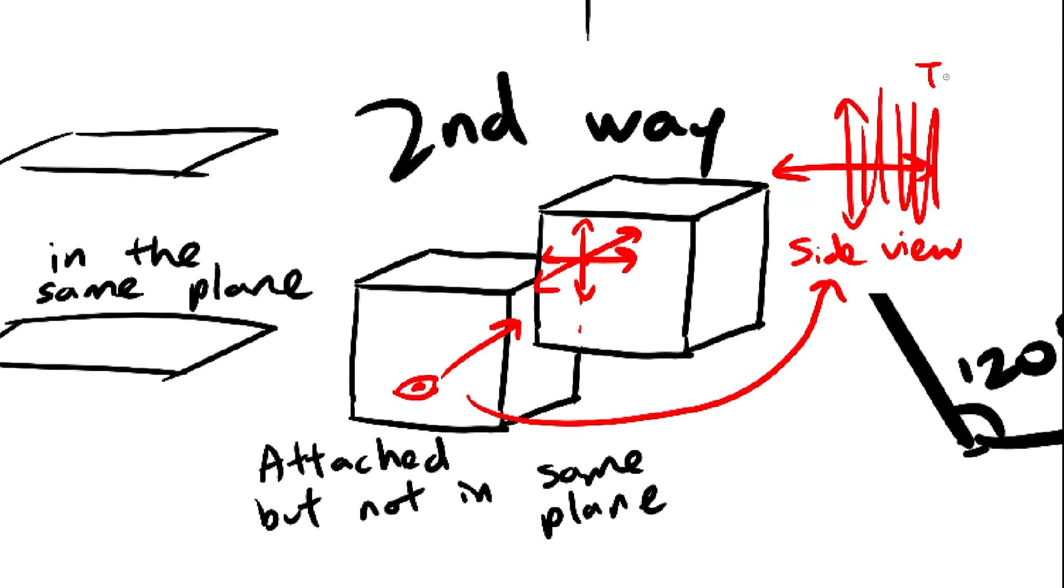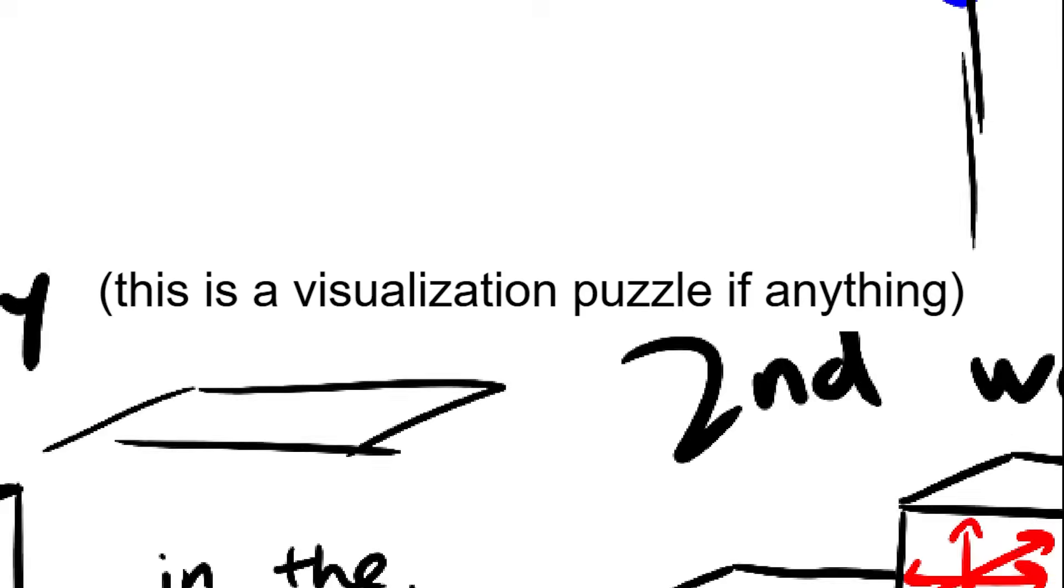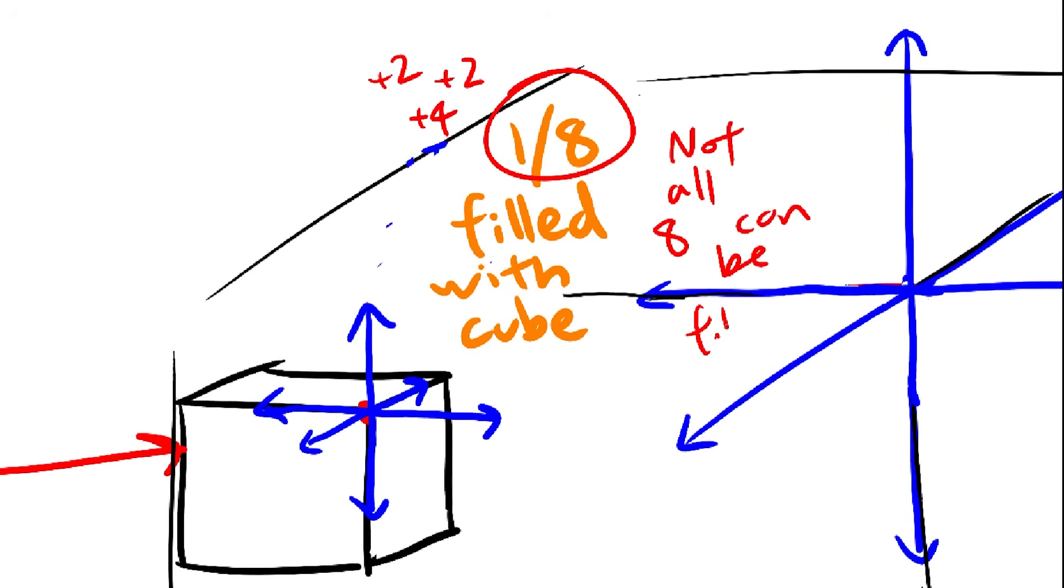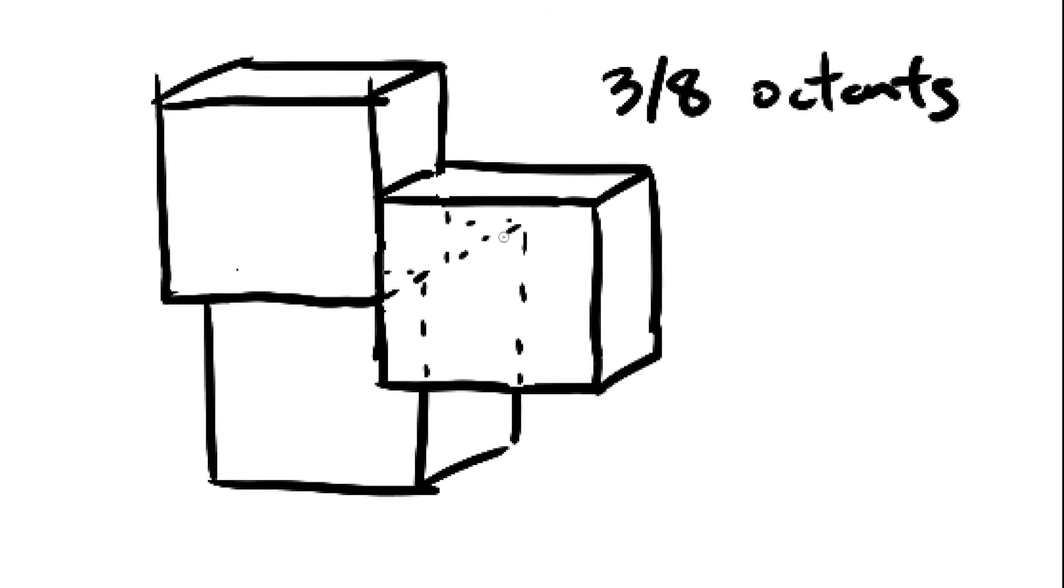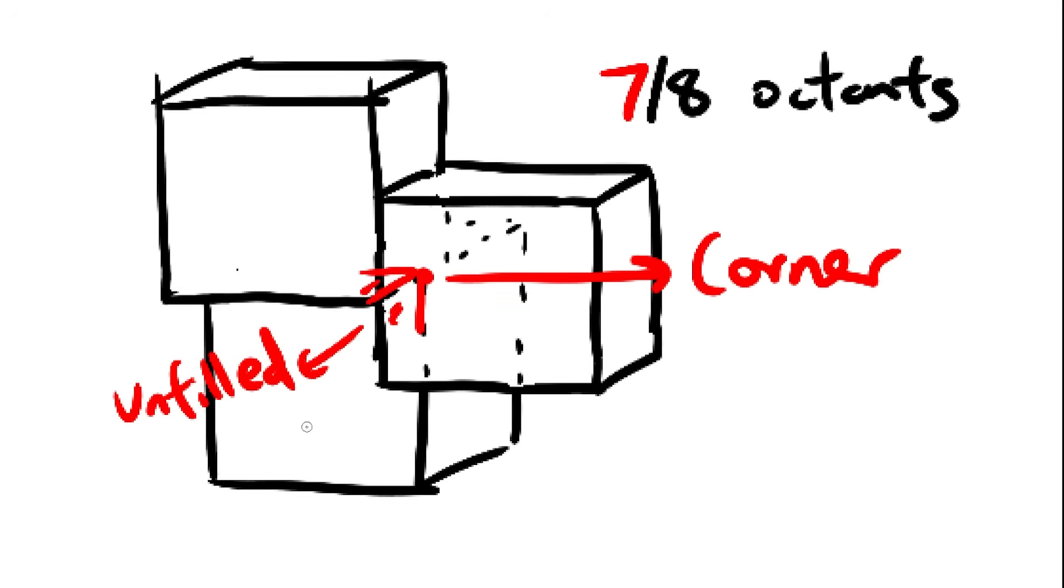and the second way will lead to four octants being filled. Again, take some time to think about this and really visualize it. Since two and four are both even numbers, you can't fill seven octants. You can only fill six, and this last one has no choice but to be filled in with a corner touching cube.